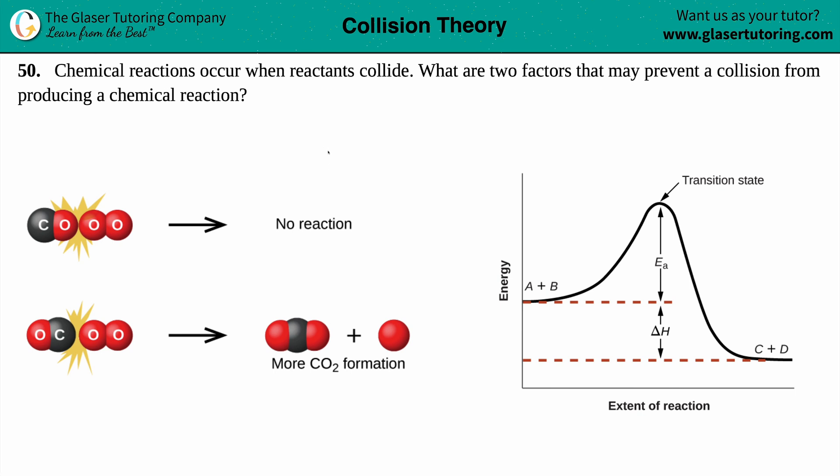Number 50. Chemical reactions occur when reactants collide. What are two factors that may prevent a collision from producing a chemical reaction? Okay, so in order for a chemical reaction to occur, there's a couple of things that have to happen. A chemical reaction always occurs when your reactants come together, they collide, they touch one another. The reactants on a balanced equation are always the left side of your information.